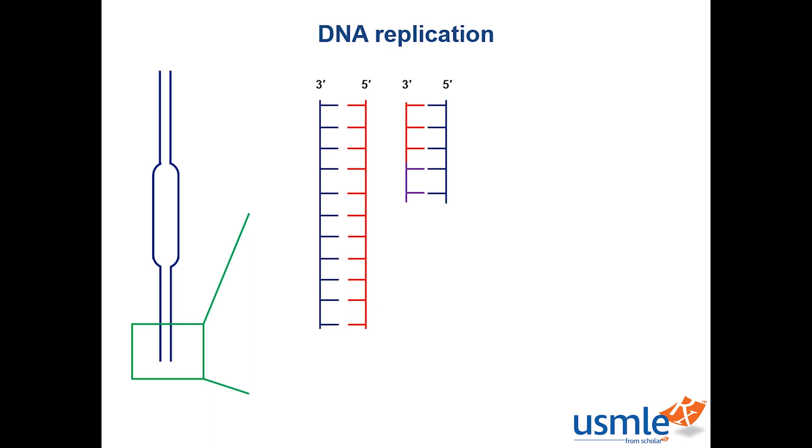The solution is to use telomerase, which is a ribonucleoprotein that repetitively adds a 6-nucleotide sequence, TTAGGG, or TAG, and it's added to the end of the lagging strand, creating non-coding junk DNA that can be lost without harming the function of the cell.